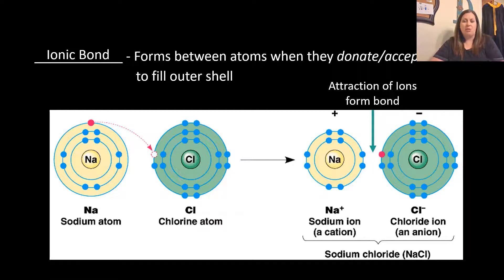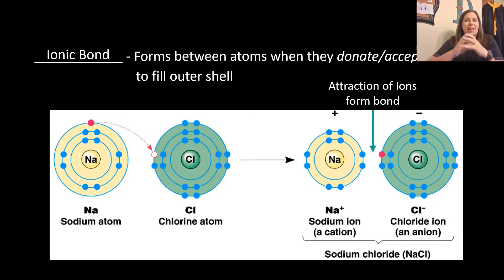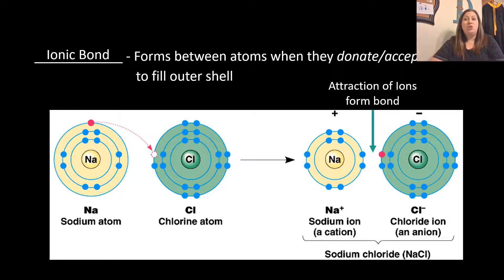A classic example is table salt, NaCl. Sodium has one electron in its outer shell and needs eight total — it would need to get seven more, which is very difficult — so instead it gives away the one in its outer shell. Now it has eight in the next shell and is 'happy,' but carries a positive charge, becoming a sodium ion. Chlorine has seven in its outer shell and only needs one more, so it accepts sodium's electron, gains a negative charge, and becomes a chloride ion. Sodium and chlorine then have opposite charges, attract each other, and form sodium chloride, or table salt.